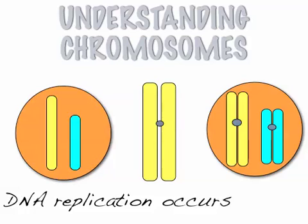DNA replication has to happen before the cell divides. This occurs in both mitosis and meiosis — the DNA needs to double before any division takes place.